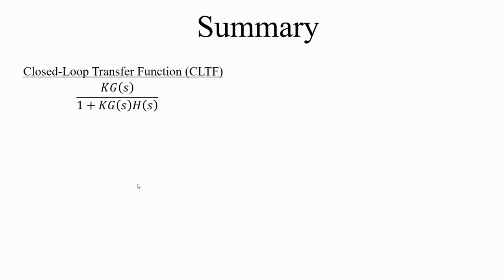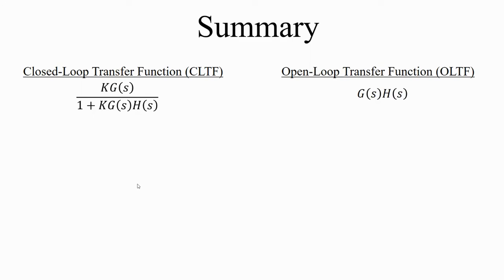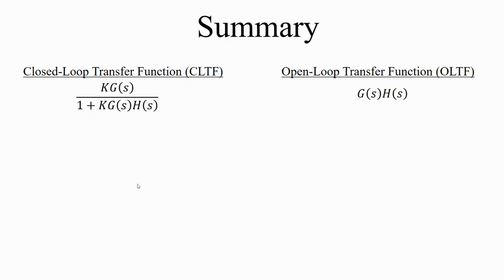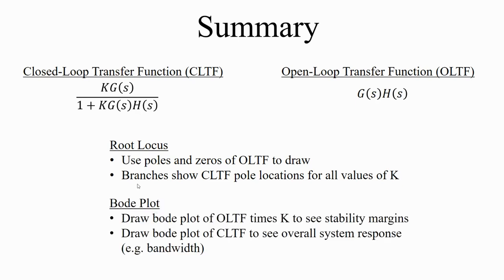In summary: the closed-loop transfer function — k g of s over 1 plus k g of s h of s — characterizes the entire feedback system. The open-loop transfer function, g of s times h of s, appears in the characteristic equation and tells us about the poles of the closed-loop transfer function. For the root locus diagram, we use the poles and zeros of the open-loop transfer function to draw it, and the branches tell us the pole locations of the closed-loop transfer function for all values of k. For Bode plots, we draw the open-loop transfer function times k to find stability margins, and the closed-loop transfer function Bode plot to find the overall frequency response and bandwidth. That's a broad strokes overview of feedback control.